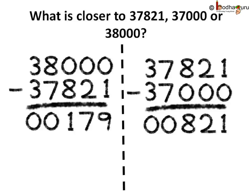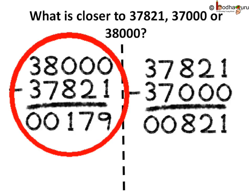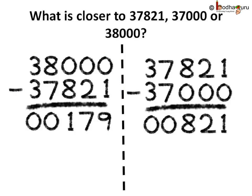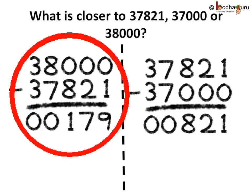What is the difference between 38,000 and 37,821? Let's write it down: 38,000 minus 37,821 is equal to 179.